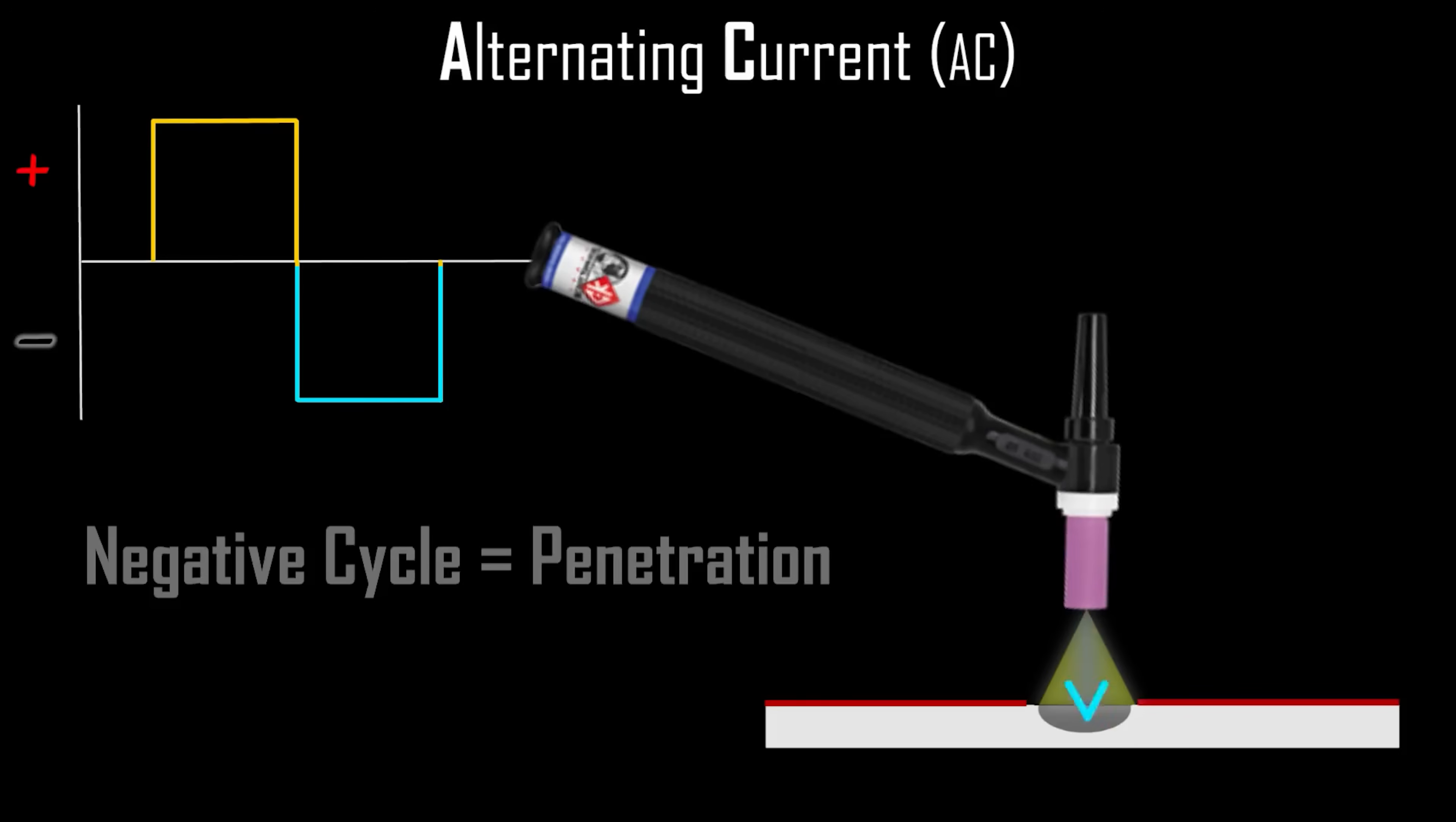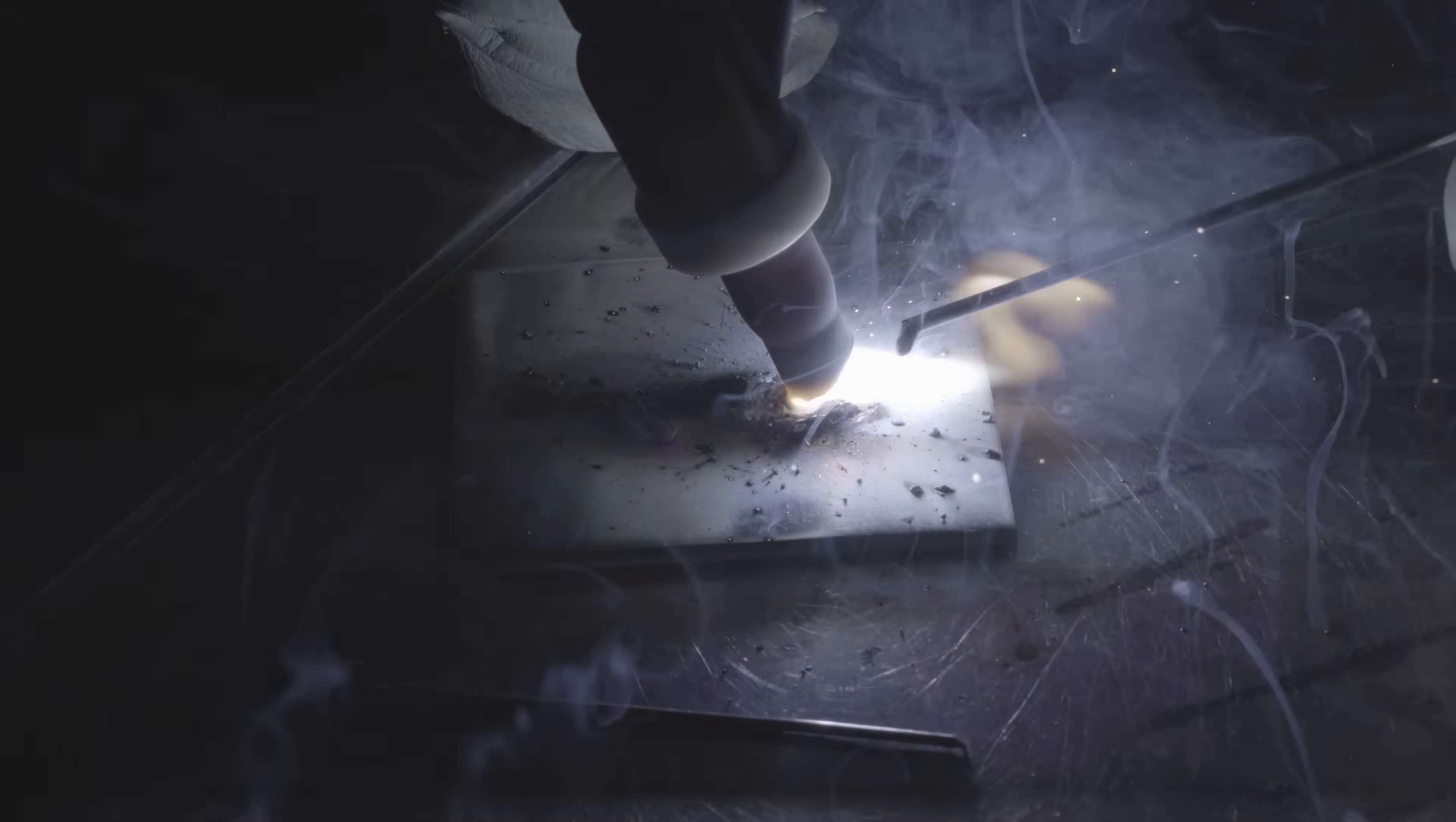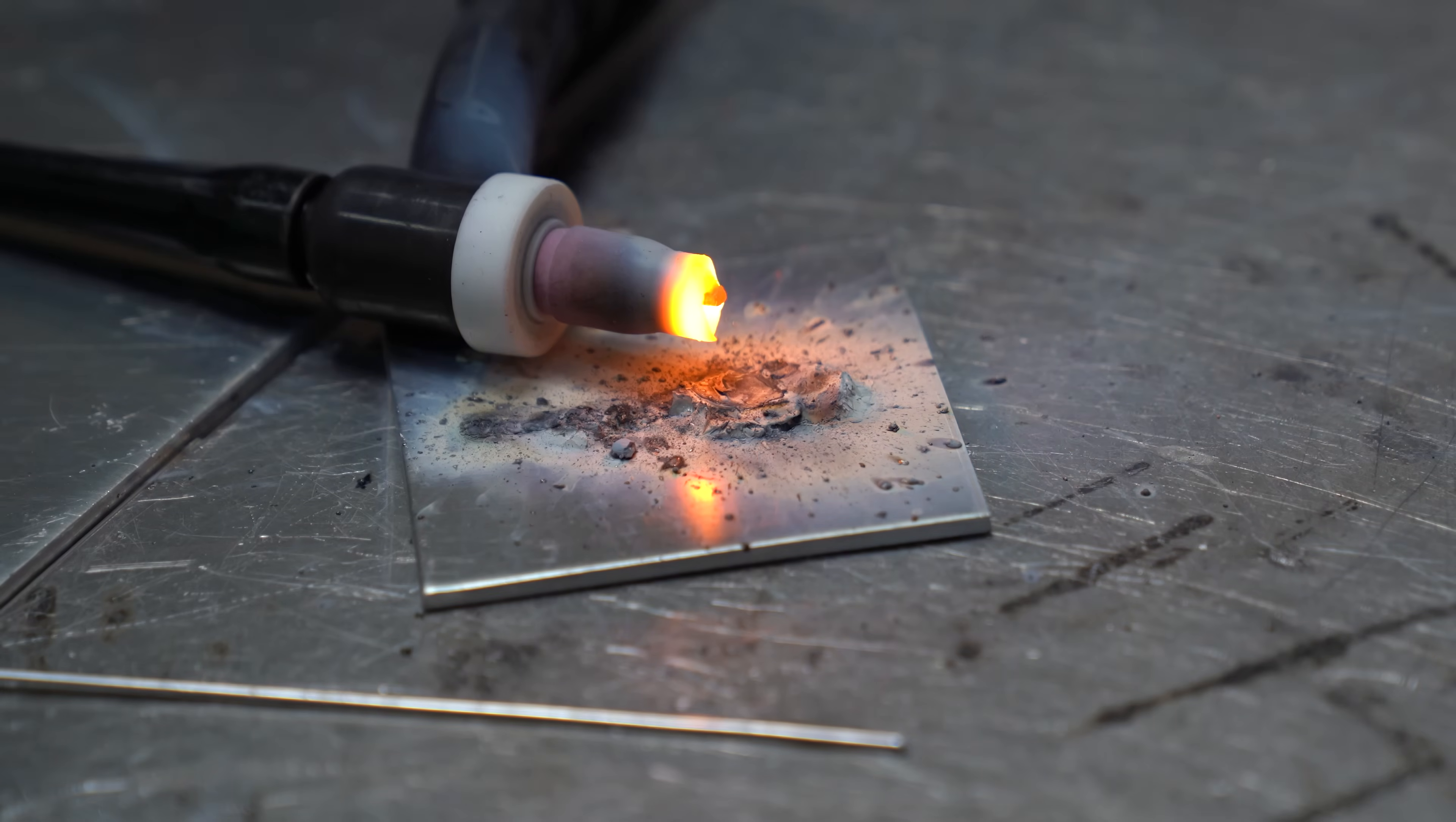The reason why we use argon as a shielding gas is to prevent the oxide layer from forming again as we create a bead. And we also use it so we can strike an arc without the shielding gas blowing the tungsten up and melting the cup down.